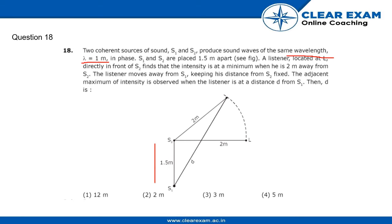A listener located at L, directly in front of S2, finds that the intensity is at minimum when he is 2 meters away from S2.